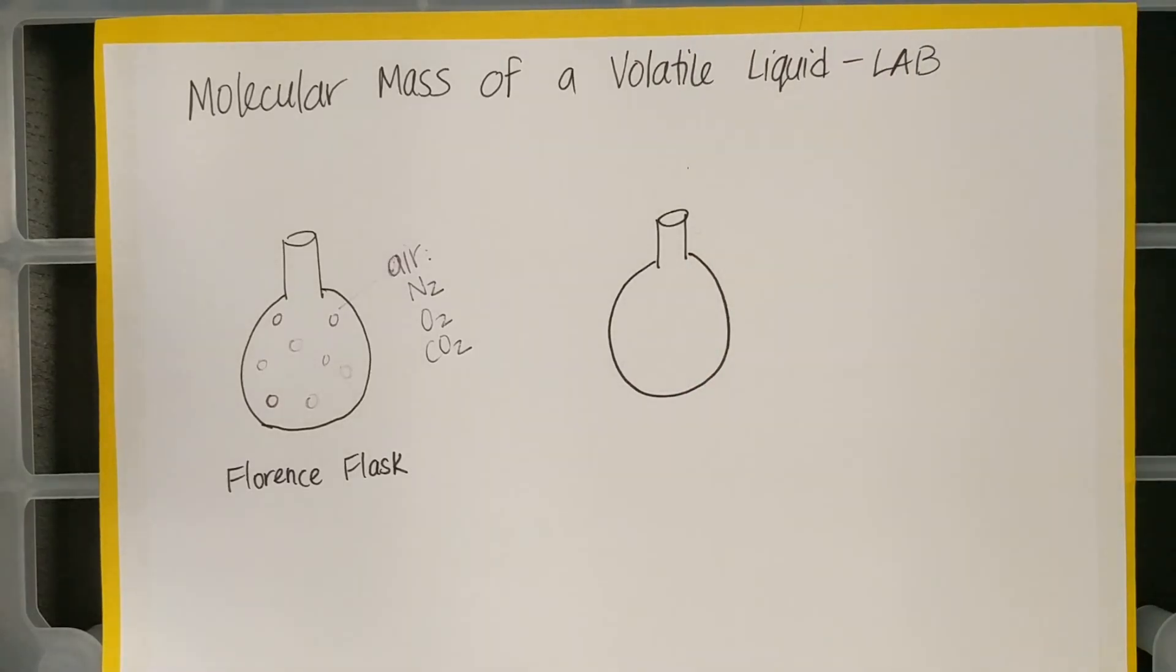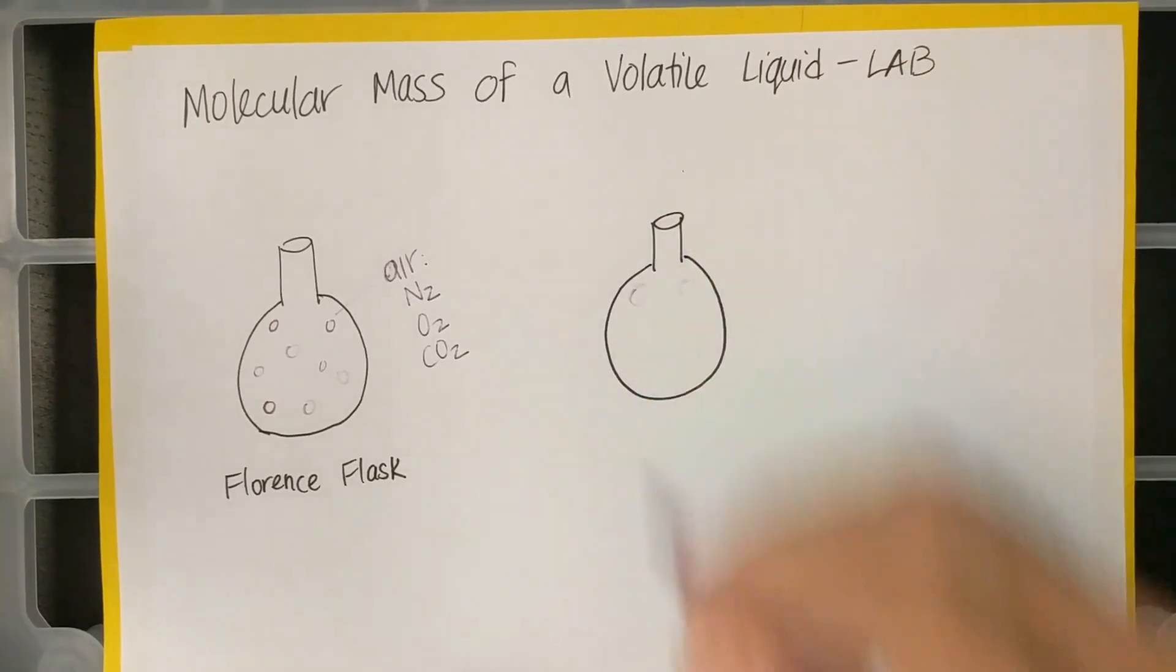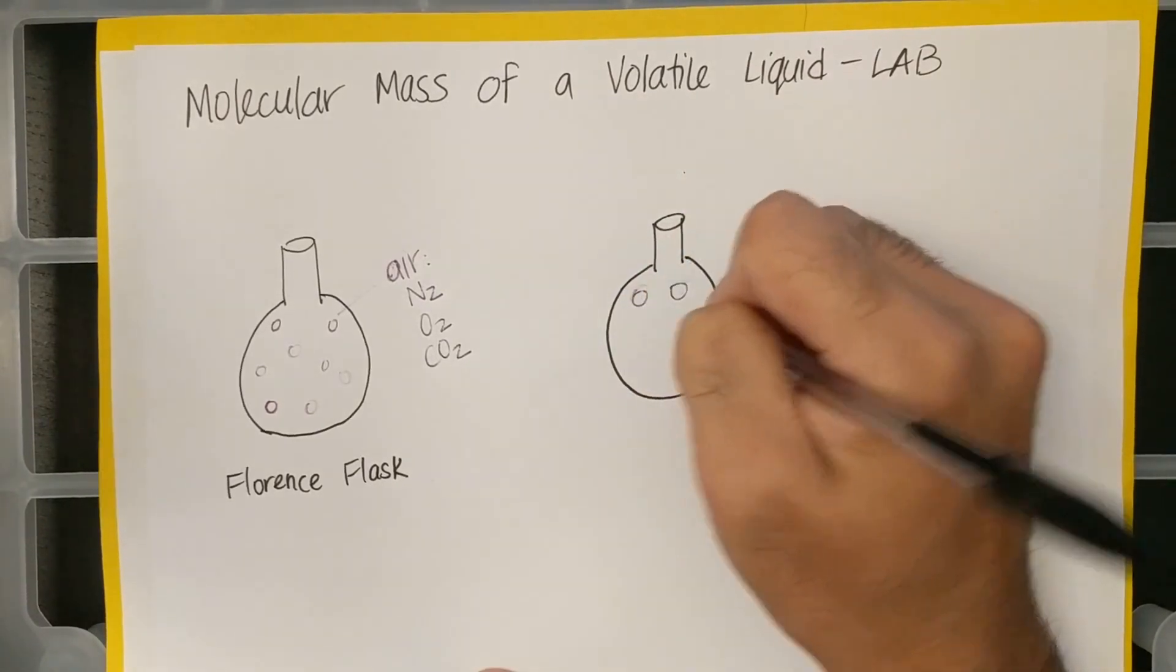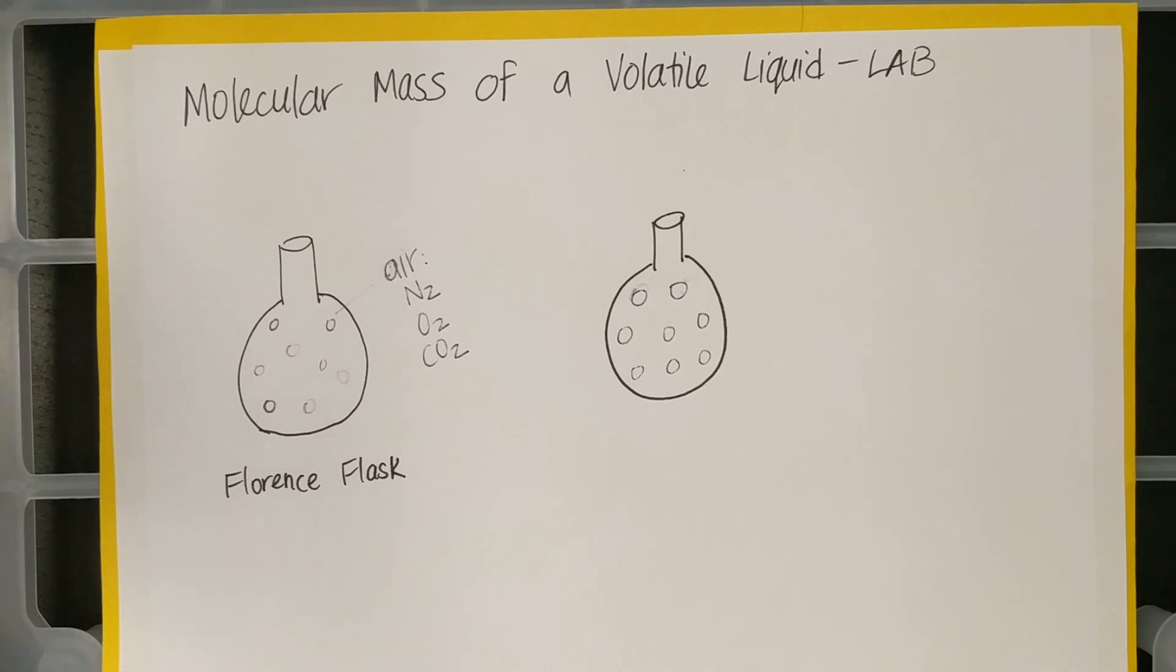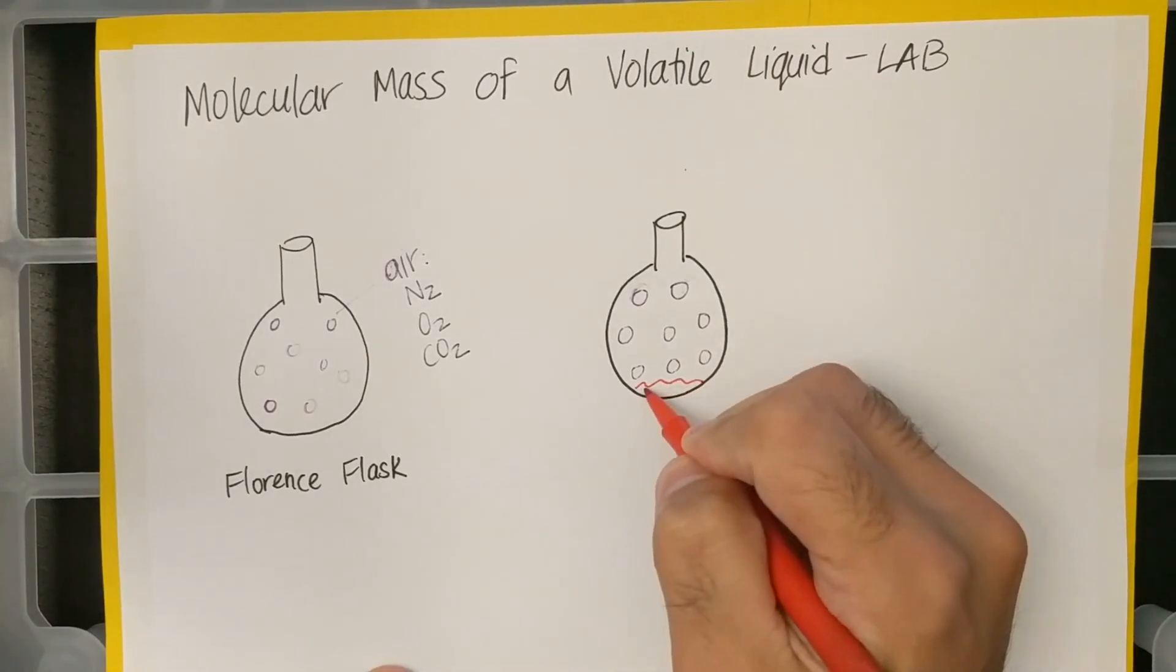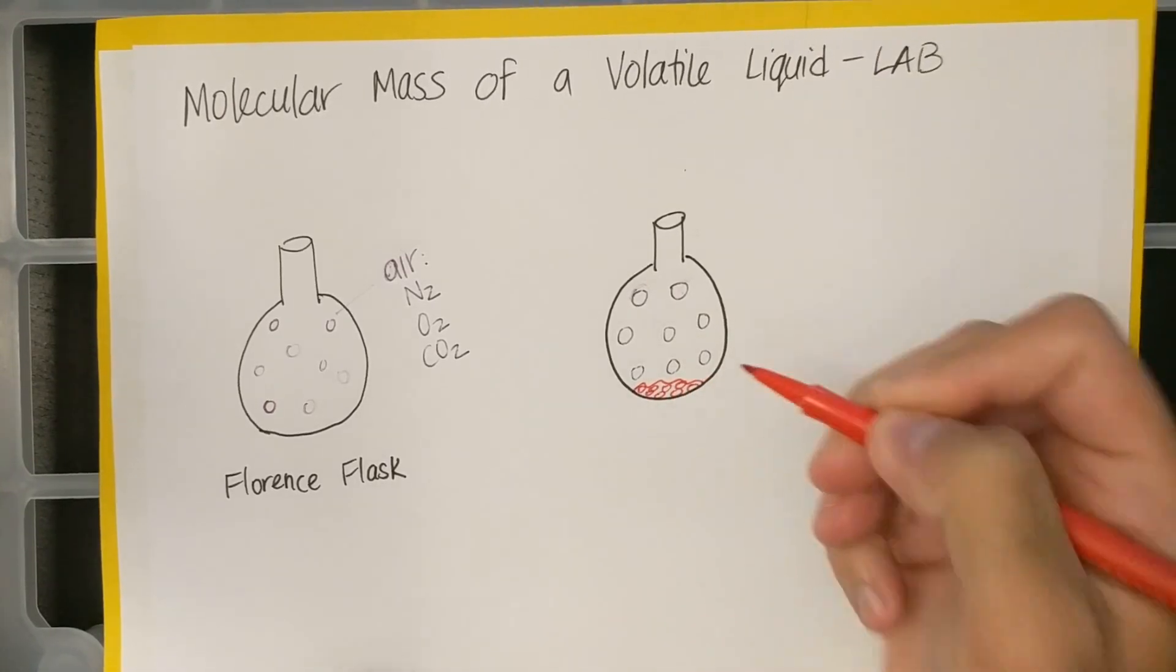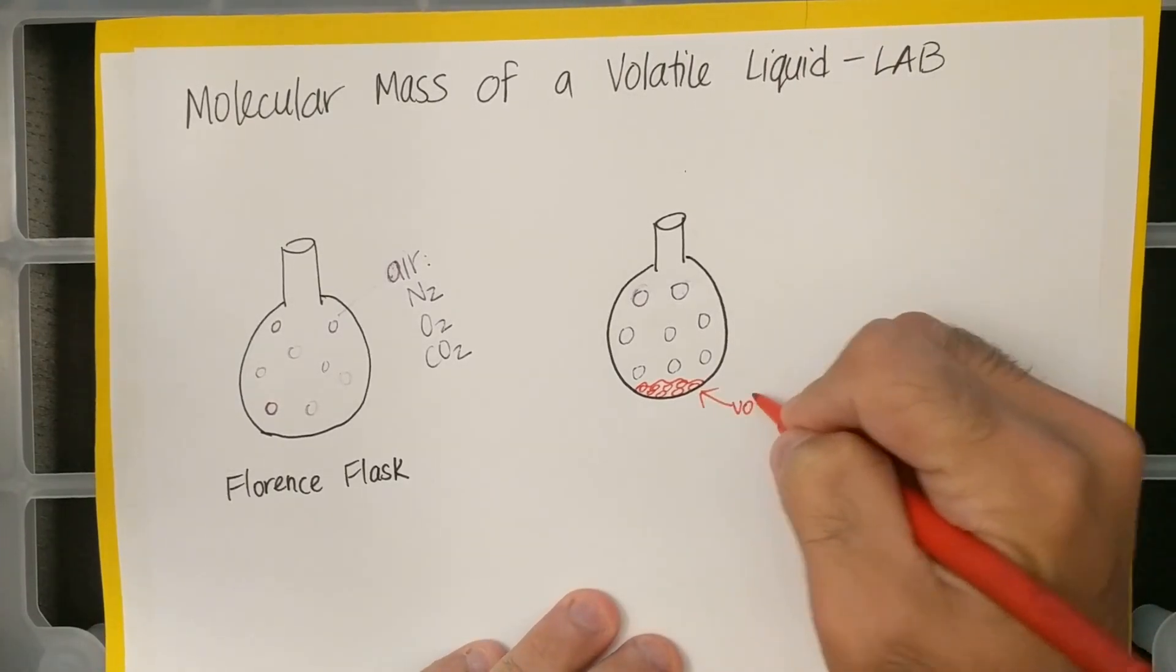Okay, and so I'm going to draw the air particles in there, and let's say red is going to be our volatile liquid. So I'll draw like a little splooshy thing, and I'll draw particles of liquid close together. Okay, so this is our volatile liquid.